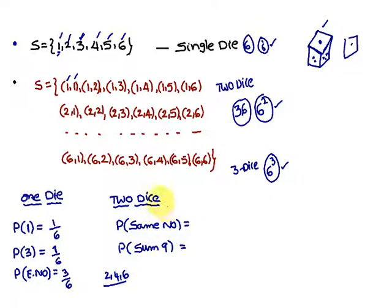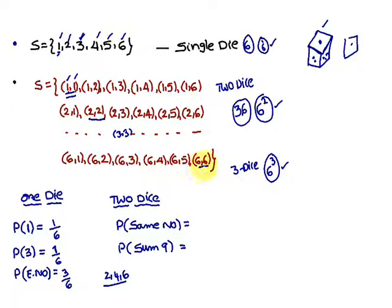Next, if you come across with two dice: probability of getting the same number on the two dice. Probability of getting the same number means pairs having the same number on the two dice — first die one, second die one. Then two-two gives one more pair. Similarly, three-three, four-four, five-five, and six-six. So how many elements are favorable to the event? Six elements are favorable out of the total 36 elements in the sample space. Therefore, six by 36 is the probability.